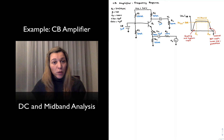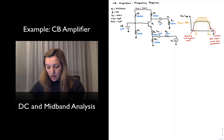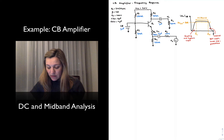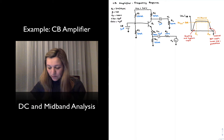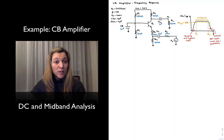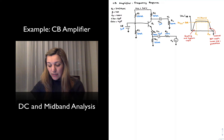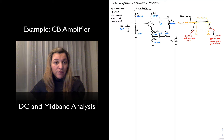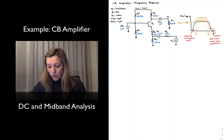I have drawn my common base amplifier with all my resistor and capacitor values. Notice that I have a signal source VS followed by a source resistance RS, and then my signal is fed into my common base amplifier. In a common base, the input signal goes into the emitter and the output is taken out of the collector. Both input and output are fed into the circuit via a coupling capacitor, and taken out of the circuit via another coupling capacitor.